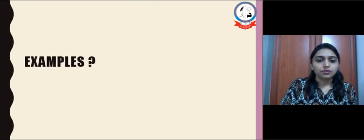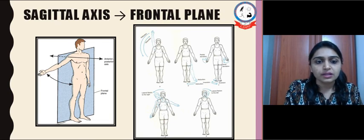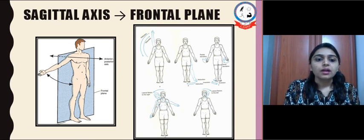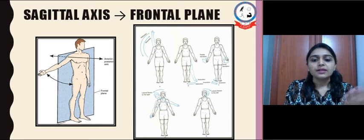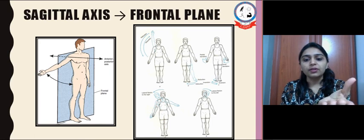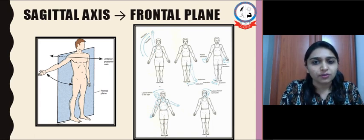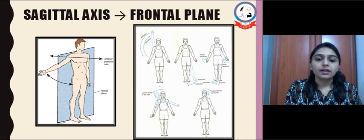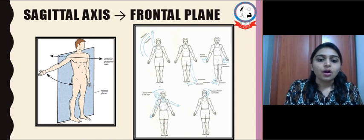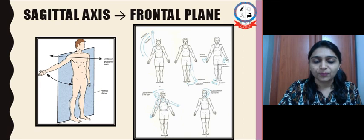Let's see examples of each axis. The sagittal axis passes from anterior to posterior. In most joints, adduction-abduction varieties of joint movement take place around the sagittal axis in the frontal plane, except that of the thumb. Examples include adduction-abduction at the shoulder joint, at the hip joint, radial-ulnar deviation at the wrist joint, and side flexion of the cervical and lumbar spine.